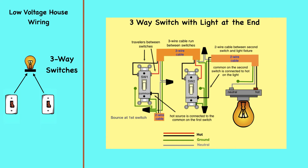In this diagram, the electrical source is at the first switch and the light is located at the end of the circuit. A three-wire cable runs between the switches, and a two-wire cable runs to the light. The black and red wires between switch number one and switch number two are connected to the traveler terminals. The hot source is connected to the common terminal on switch number one, and the common terminal on switch number two connects to the hot terminal on the light.